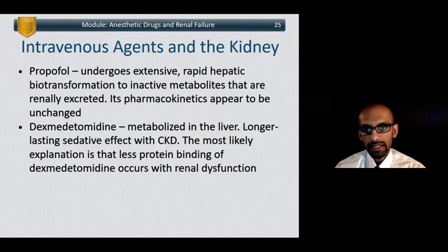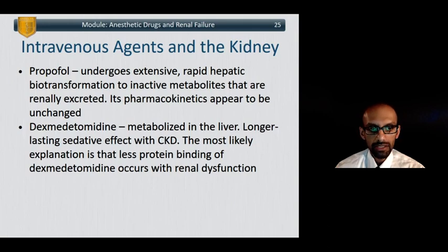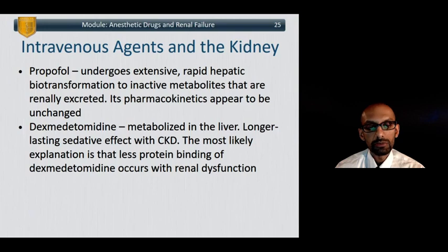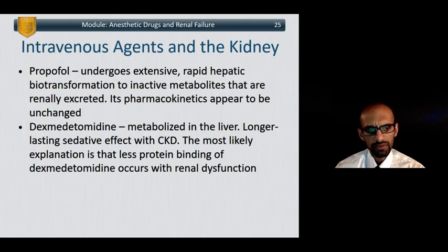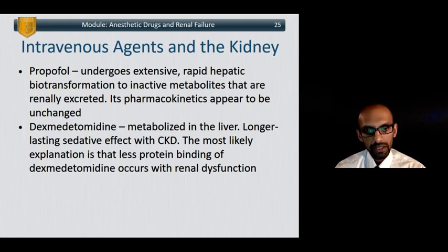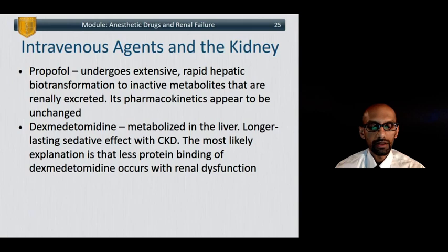Sixty to eighty percent of midazolam is excreted as its active alpha-hydroxy metabolite and does accumulate, particularly during long-term infusions. Diazepam and lorazepam have active metabolites as well and are also renally dependent. With midazolam, we typically use very small doses in most clinical situations for which the drug just redistributes. Propofol's kinetics are really unchanged in renal failure — it is very rapidly metabolized by the liver with an extraction ratio essentially close to 1, so you don't need to worry much about it. Dexmedetomidine, metabolized in the liver, does appear to have a longer-lasting effect in chronic kidney disease patients, most likely due to less protein binding with renal dysfunction.